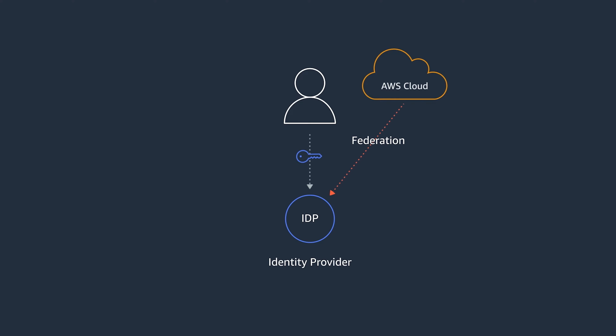There are many popular identity providers, such as Okta, Ping, Active Directory, or even the built-in identity provider available on AWS Single Sign-On. By using a single identity provider, we can manage access to multiple applications and services from a single place, because we can create, manage, and revoke access in that one location.